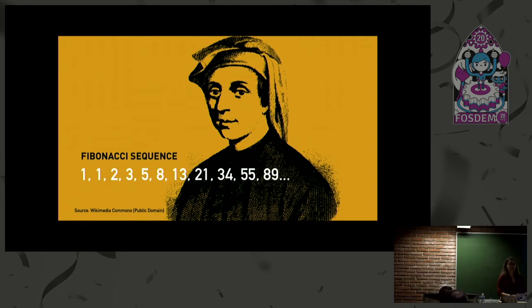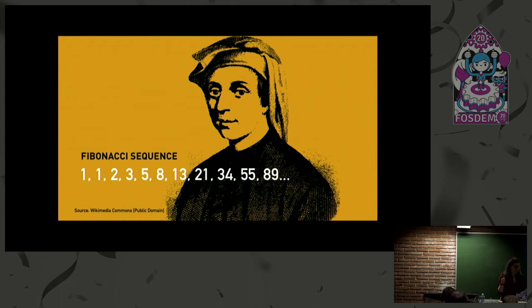In the book, he posed this question — does anyone know what the question was about? It was about rabbits. If a pair of rabbits is placed in an enclosed area, how many rabbits will be born if we assume that every month a pair of rabbits will produce another pair, and that rabbits begin to bear young two months after birth? That seemingly innocuous rabbit question leads to this very powerful Fibonacci sequence.